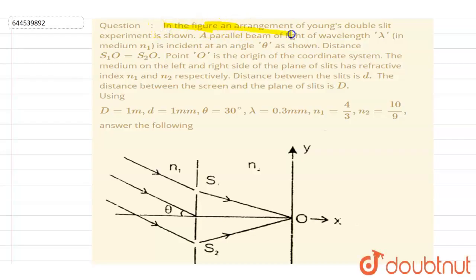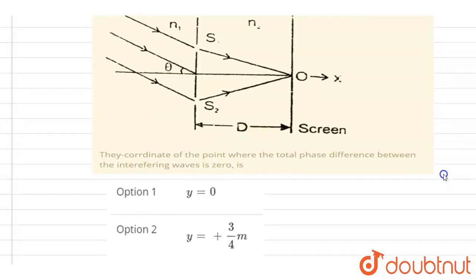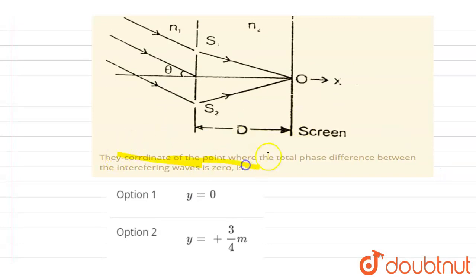Hello everyone, in the figure an arrangement of Young's double slit experiment is shown. A parallel beam of light of wavelength lambda is incident at an angle theta as shown. The distance S1O and S2O, point O is the origin of the coordinate system and the medium on the left and right side of the plane slit has refractive index N1 and N2 respectively. Distance between the slit is D and the distance between the screen and the plane is capital D. If you see the values are given here and you have to answer that the coordinate of the point where the total phase difference between the interfering wave is zero.